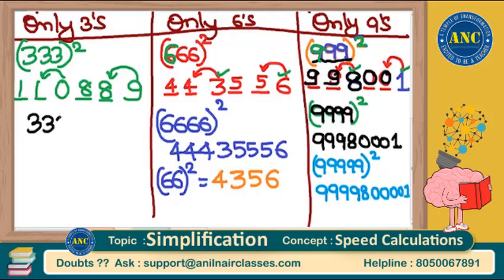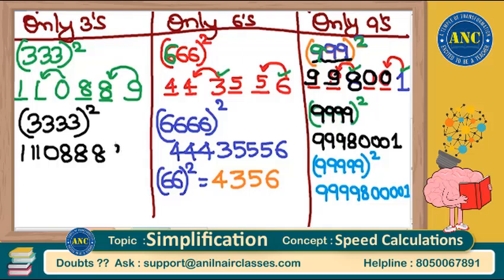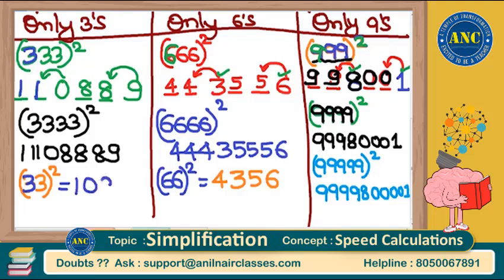For 3333 squared, the answer is 11108889. We also discussed finding 33² using the method for squares from 26 to 35: 33 − 25 = 8; 25 − 8 = 17; 17² = 289; add 800: answer is 1089. Using the only-threes technique for 33: two ones, zero, eight, nine — same answer 1089. Both methods give identical results.